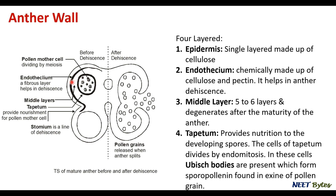Below the middle layer is the tapetum, which is very important. Its role is to provide nutrition to the developing spores. The cells of the tapetum divide by endomitosis — nuclear division occurs but not cellular division — so the genetic material doubles, fulfilling protein requirements of the cell. In these cells there are ubisch bodies, which form sporopollenin, found in the exine of the pollen grain.